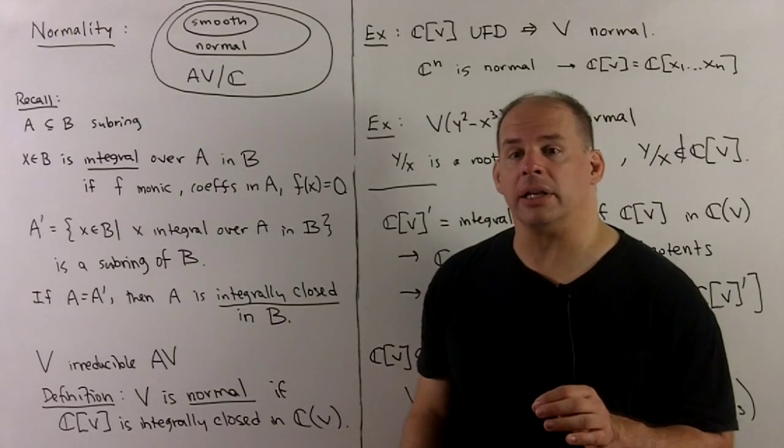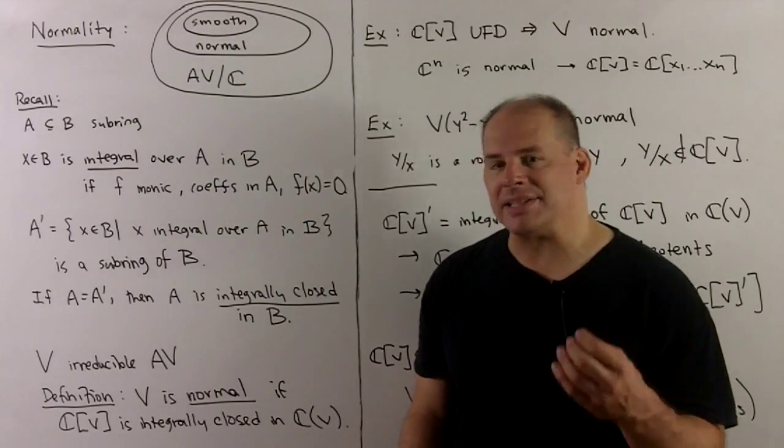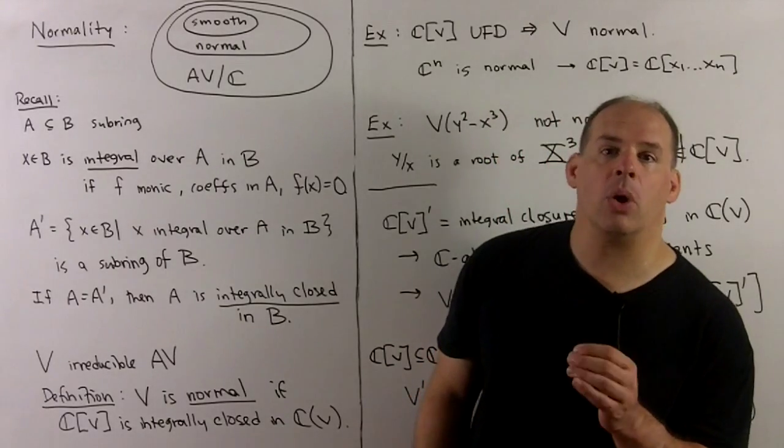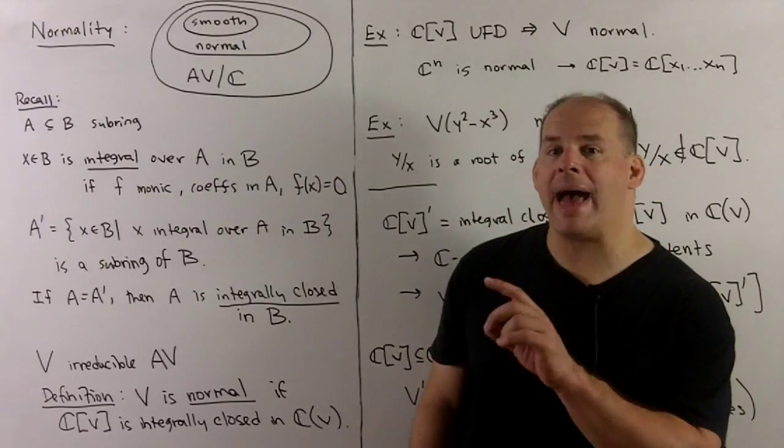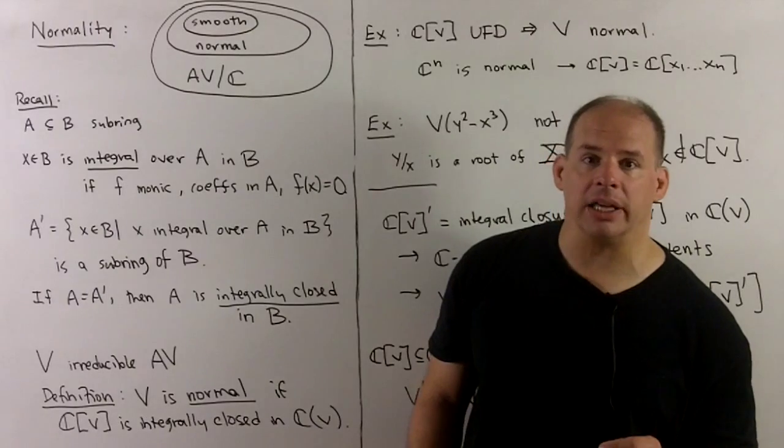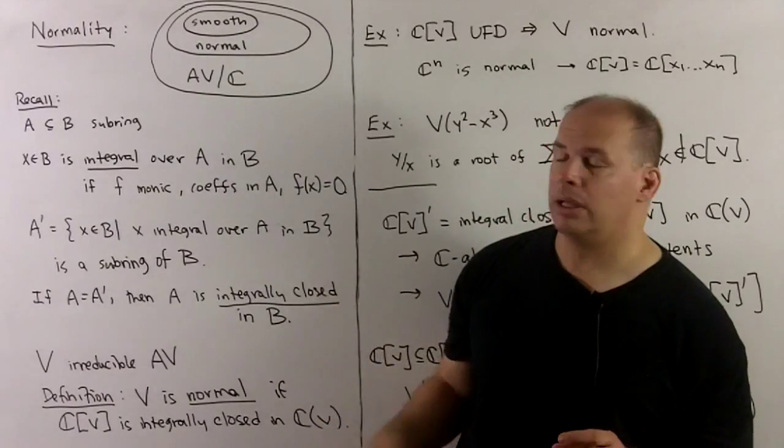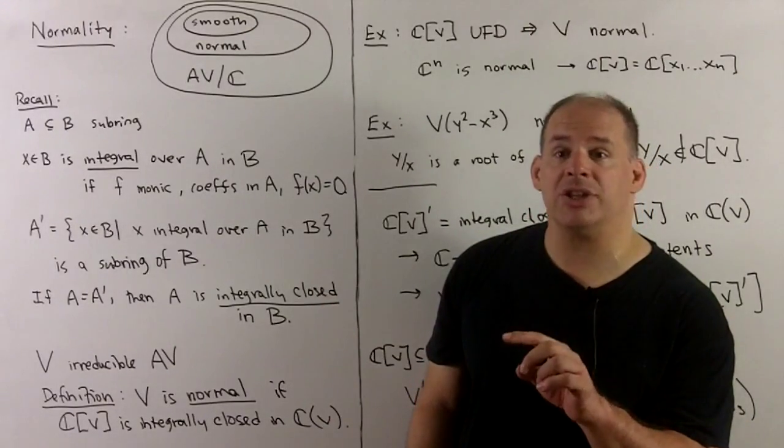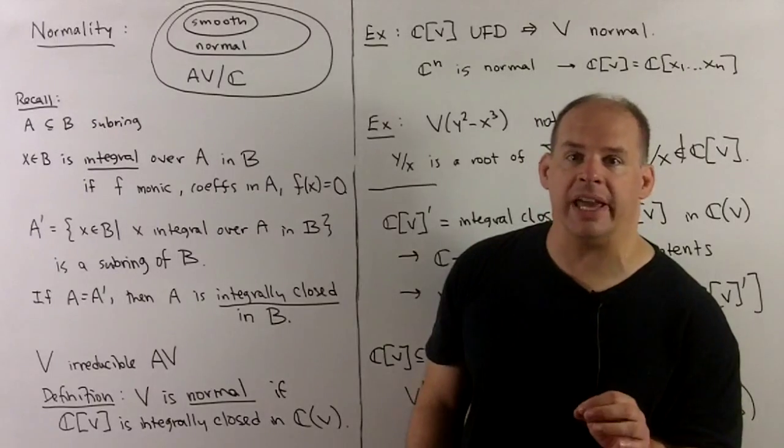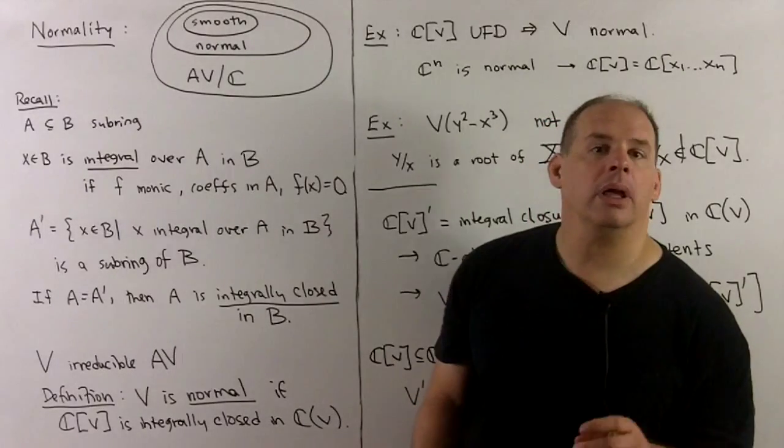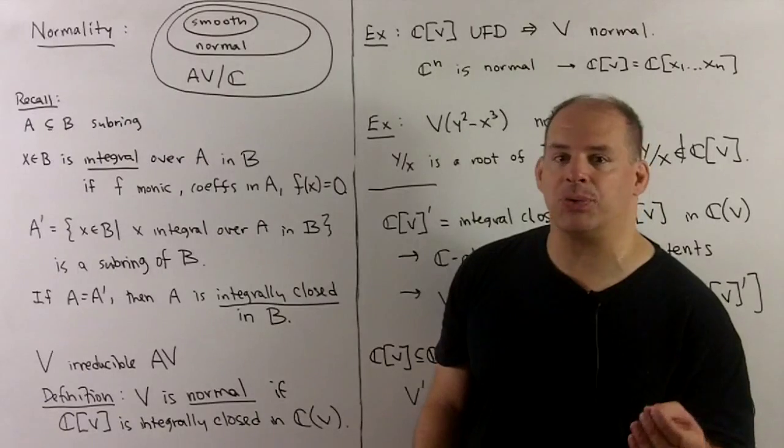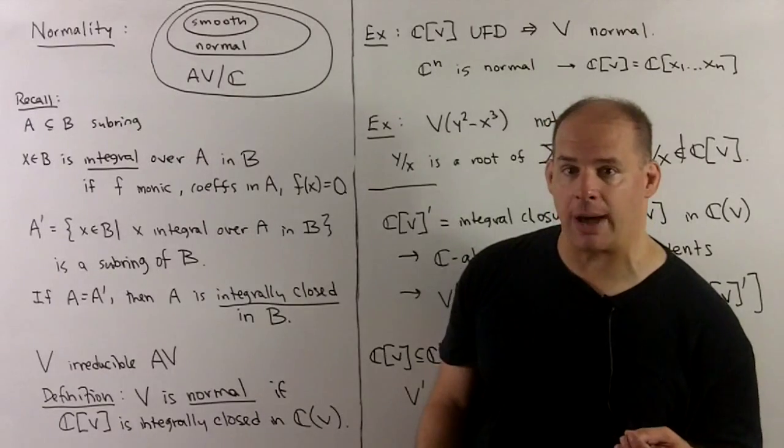Our next topic is normality. If an affine variety is not smooth, the next best thing we can hope for is that it's normal. So normality is some measure of singularity. The geometric interpretation of normality is somewhat sophisticated, so we're just going to give a general overview. When we get to toric varieties, there's a nice formulation in terms of convex geometry.